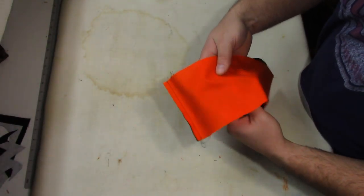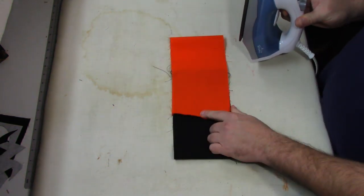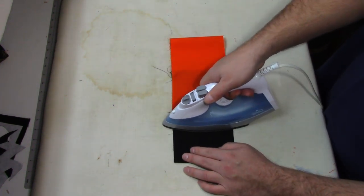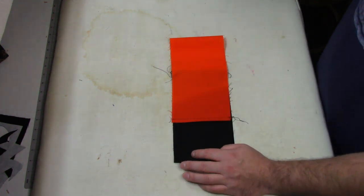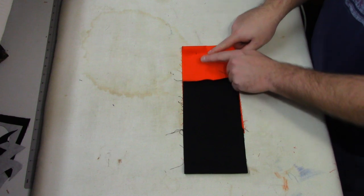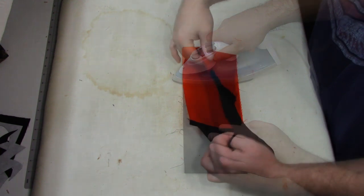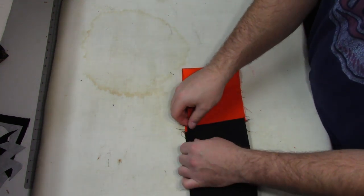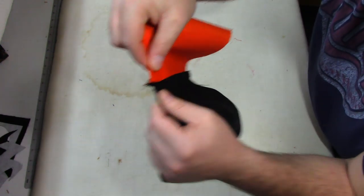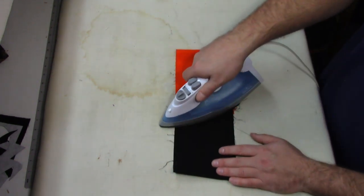So now I'm just going to open it up like this. And I'm going to press one seam towards the lining. I'm going to flip it around and I'm going to press the other seam towards the outside fabric. So in my case, the orange. So now I'm just going to line up my seam so that they nest just like that and press.